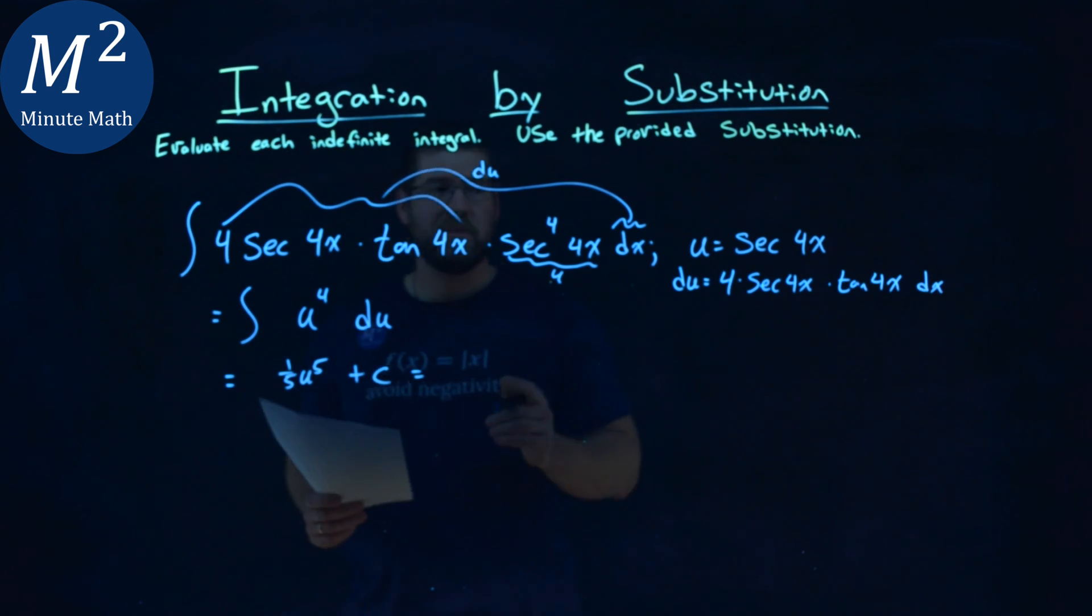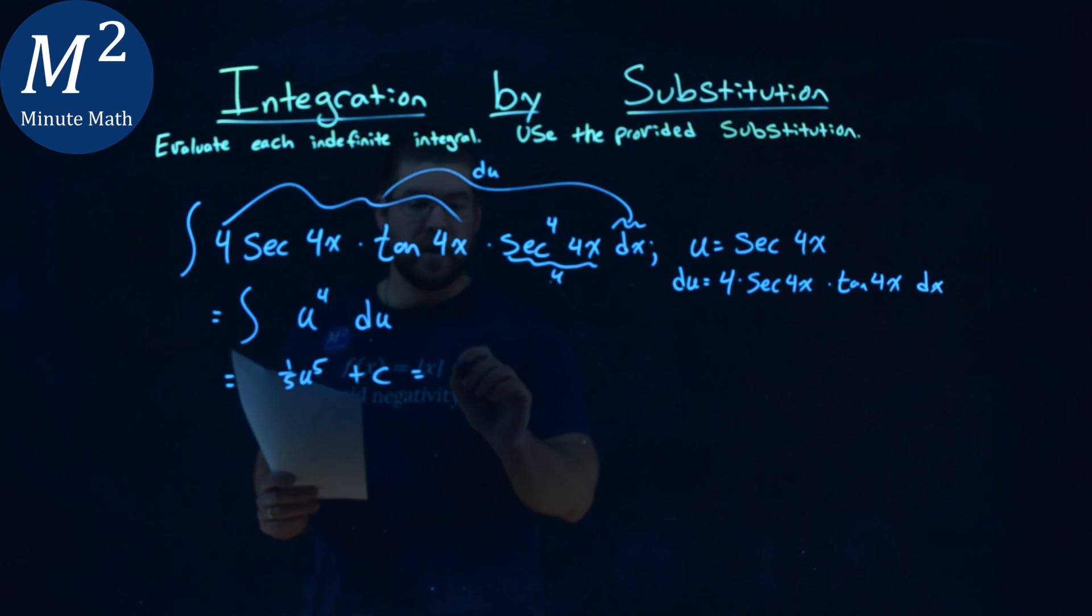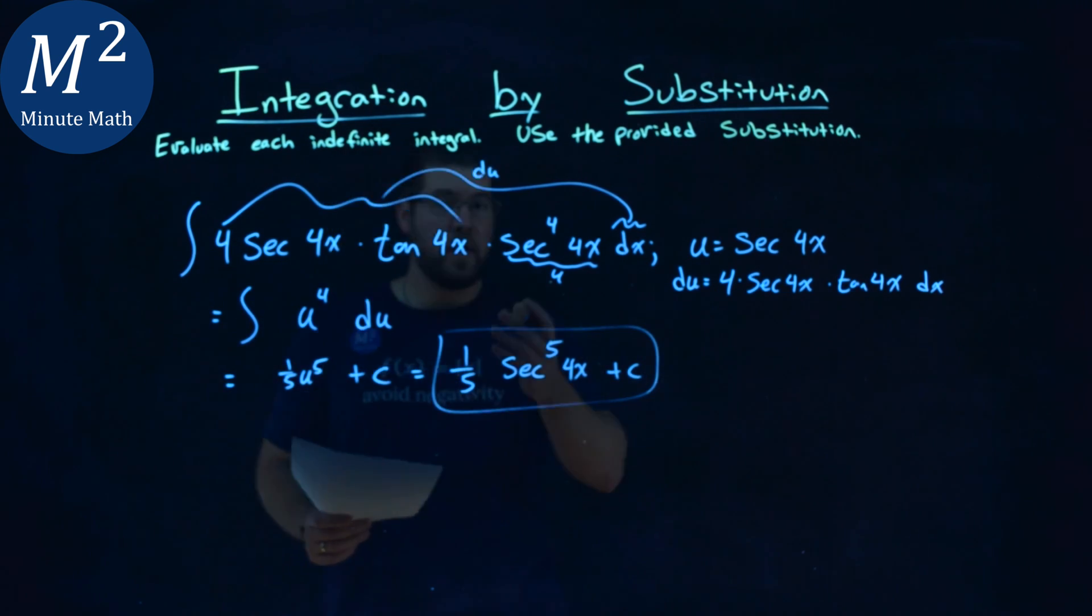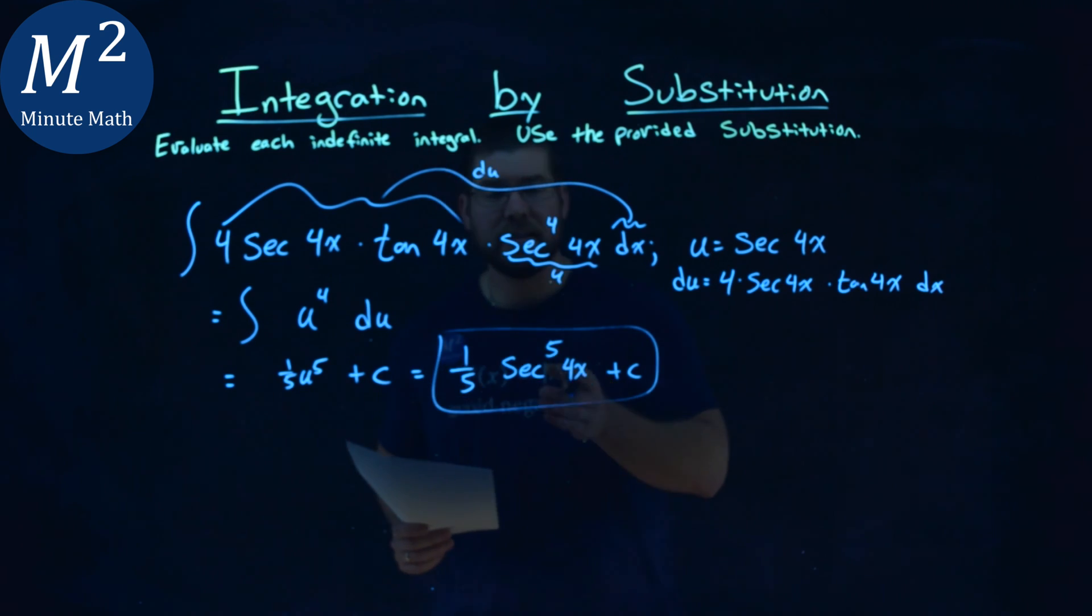From here, we plug in what our u value is. We have 1/5, and u is secant of 4x, to the 5th power. So it's 1/5 secant to the 5th power of 4x plus c. That's my final answer: 1/5 secant to the 5th power of 4x plus c.